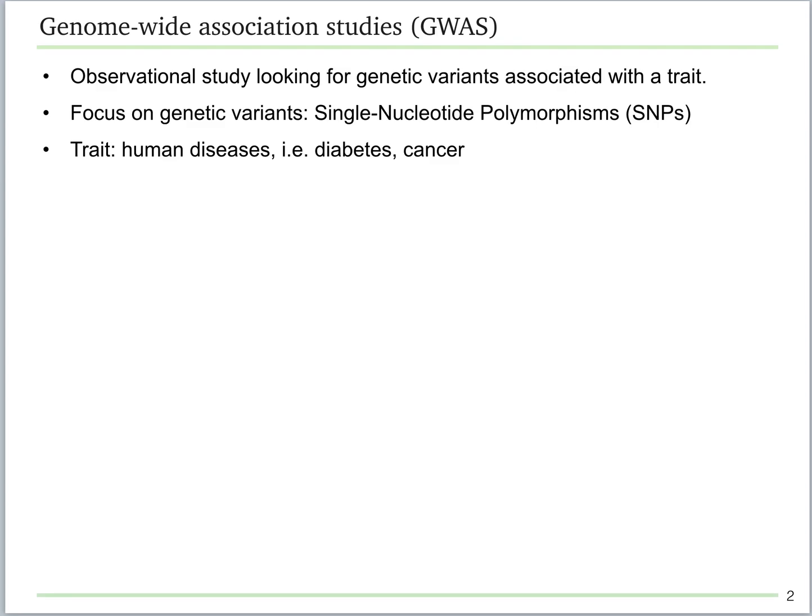Before we dive into the website resource, let's go over some background on genome-wide association studies, or GWAS. GWAS are observational studies with the goal of looking for human genetic variants associated with some traits using a genome-wide approach. The human genetic variants typically focused on by GWAS are single nucleotide polymorphisms, called SNPs. And the traits focused on are typically complex diseases like diabetes, cancer, etc.